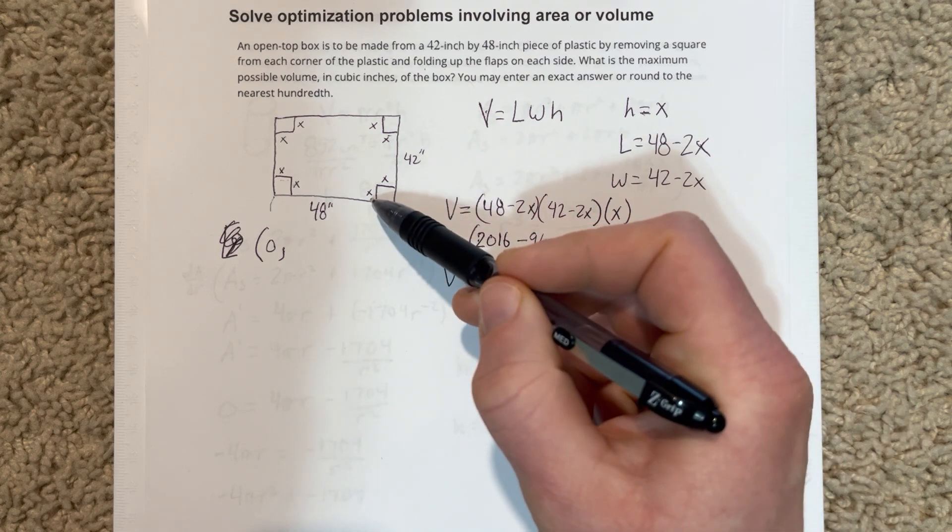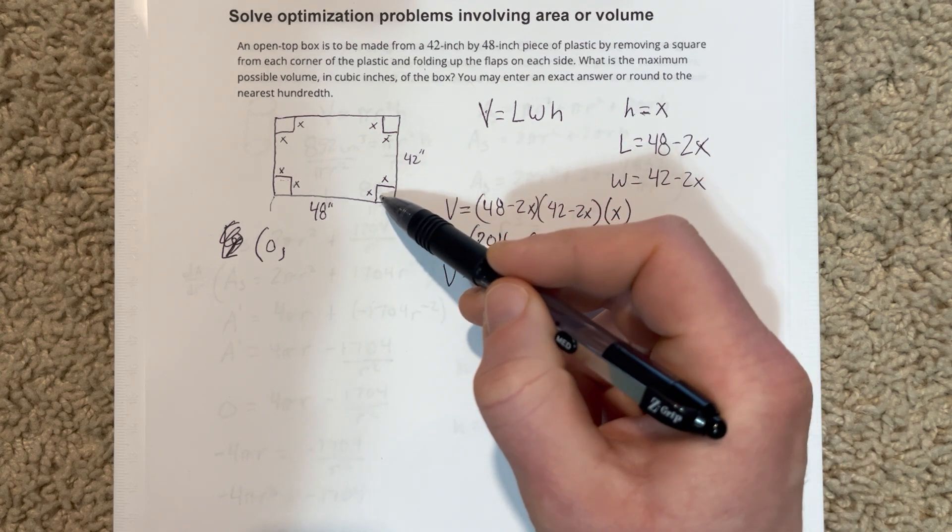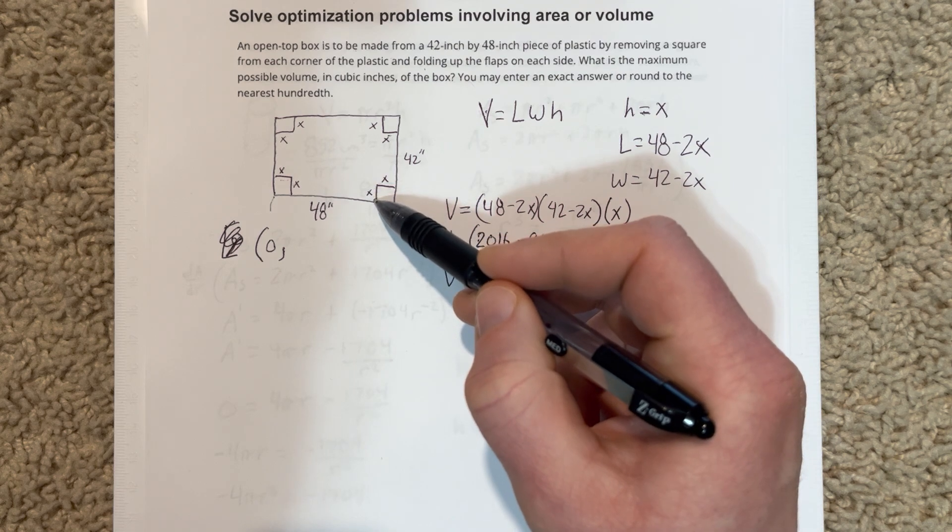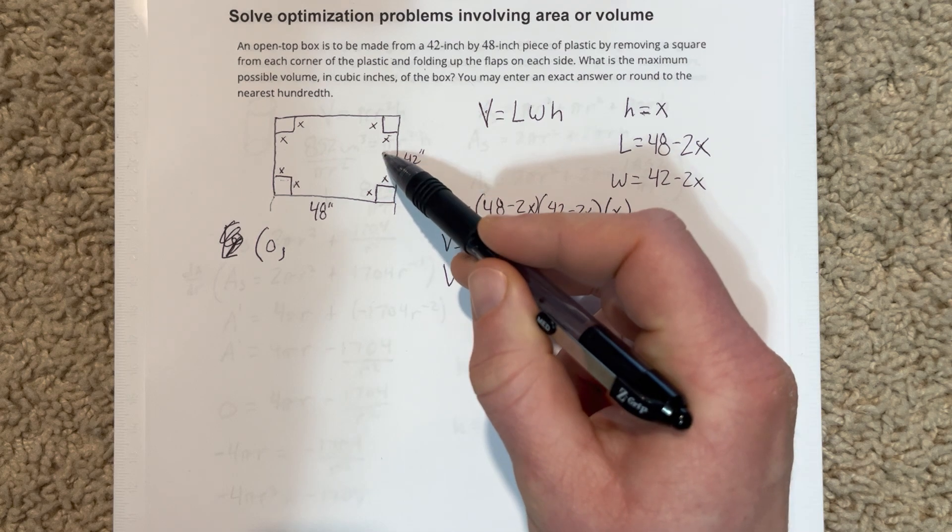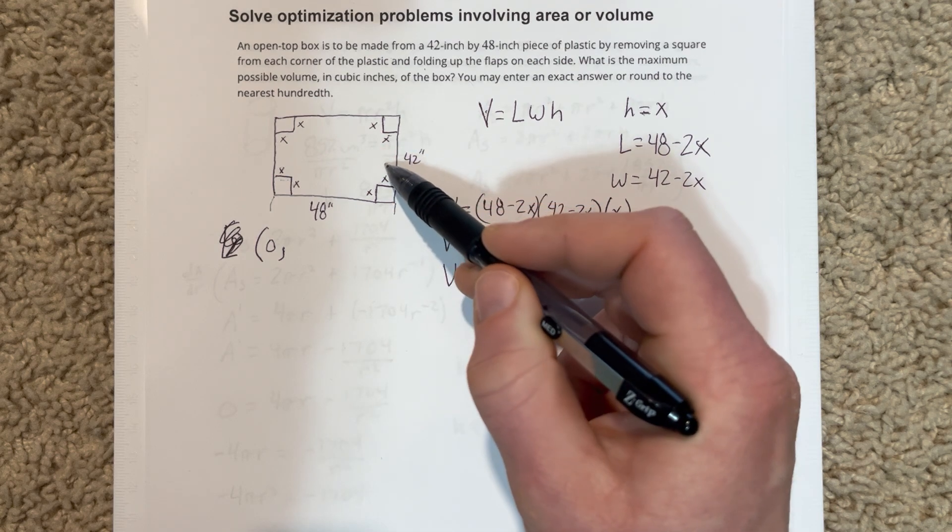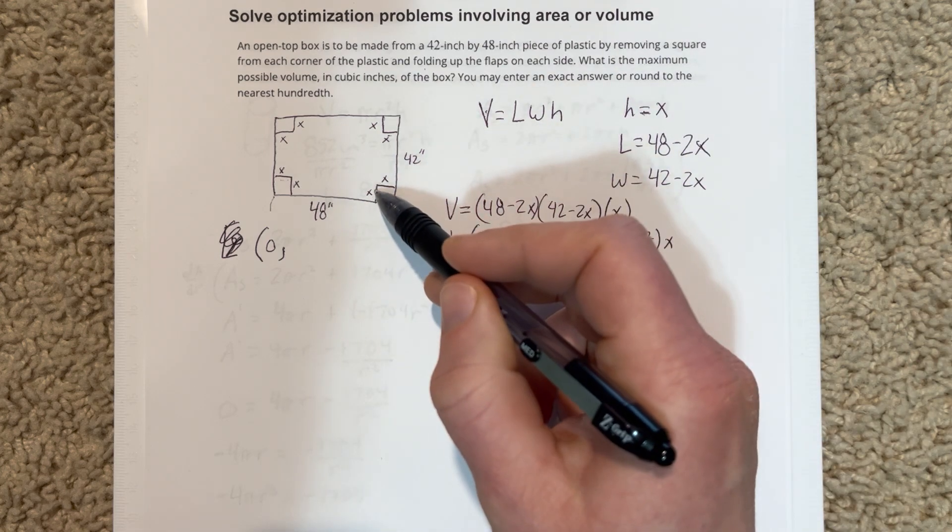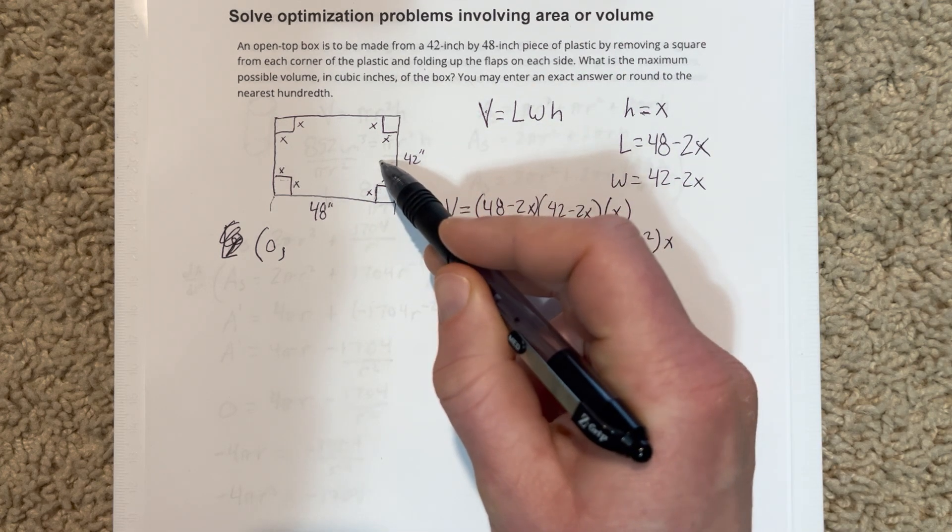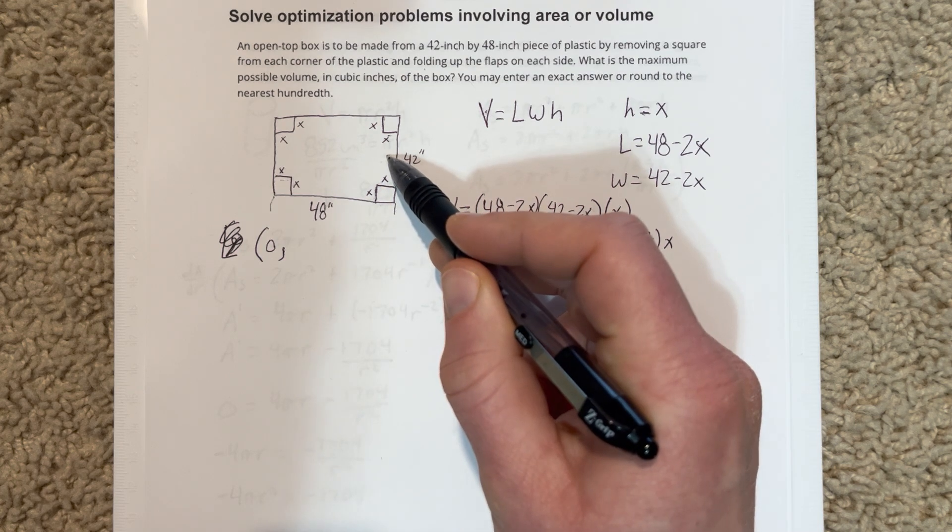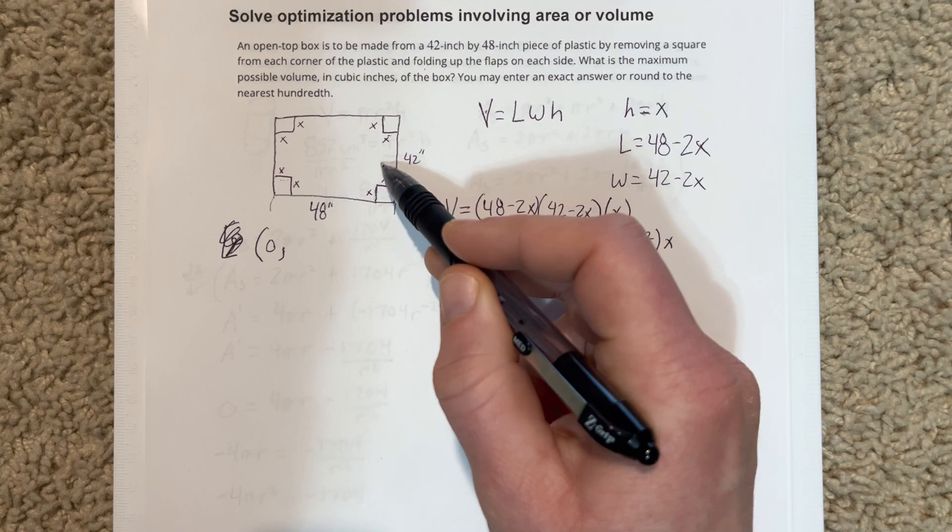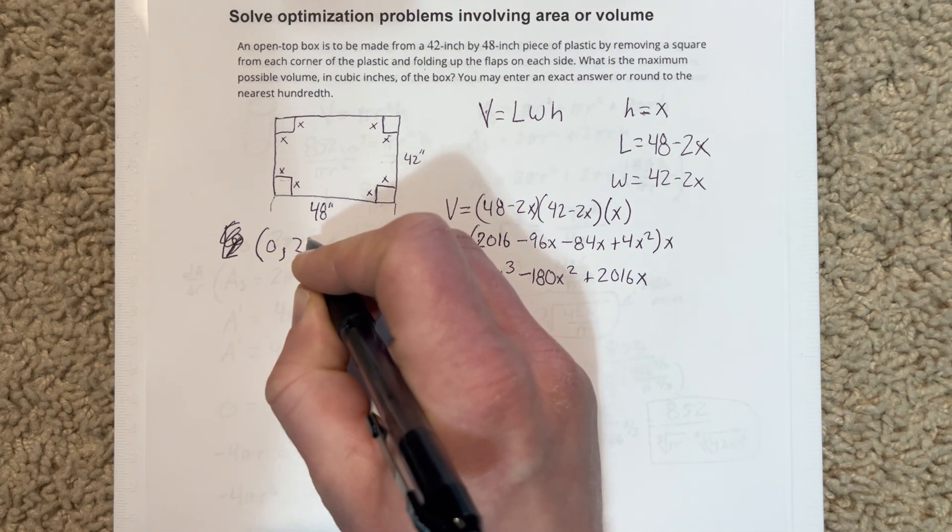But there is a limitation on how big X could be, because if X, let's say this X here were to be larger than 21, then these two tabs would be overlapping, which wouldn't make any sense. So this X value here has to be less than 21, because if it's more than 21, it's over half of the box's width. So it's got to be at least less than 21. So we're going to say that X has to be between zero and 21.